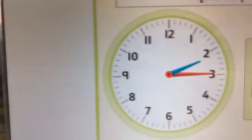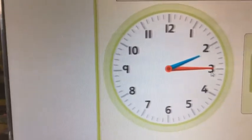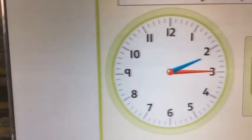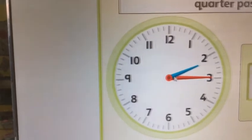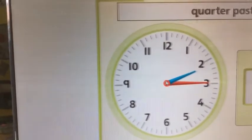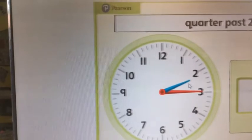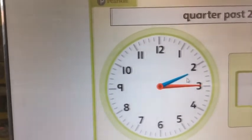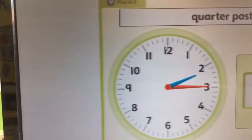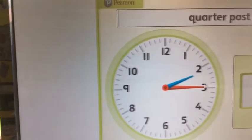Now let's revise quarter past. The minute hand, the big one, has to cut the clock into quarters, so it's always going to point at the 3. The little hand, the hour hand, is just past a number on the clock. Because it's only gone a quarter past the hour.